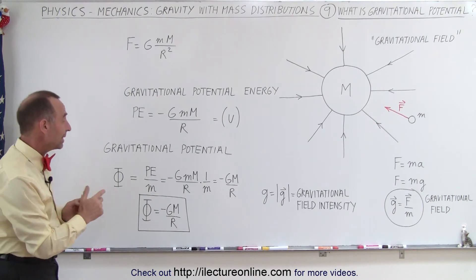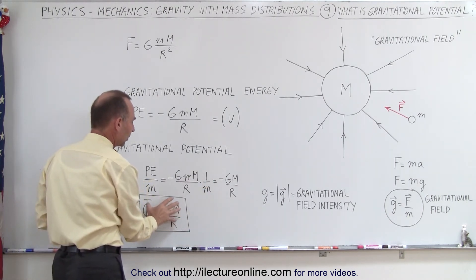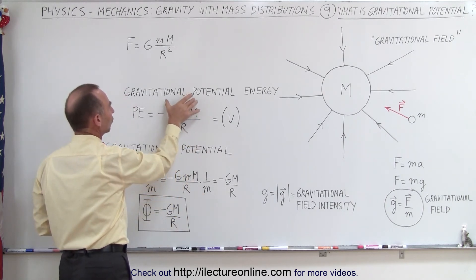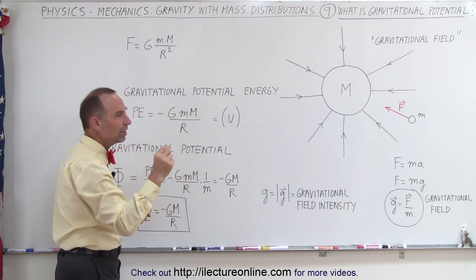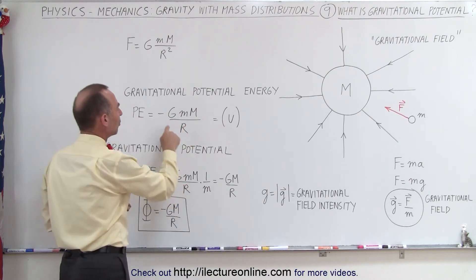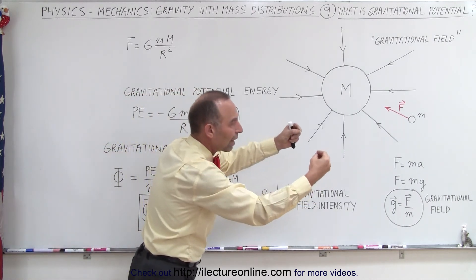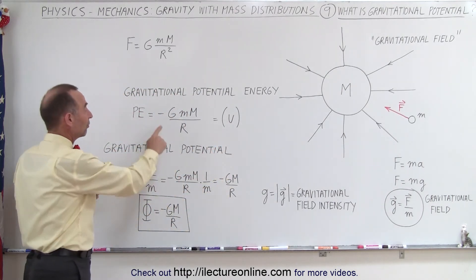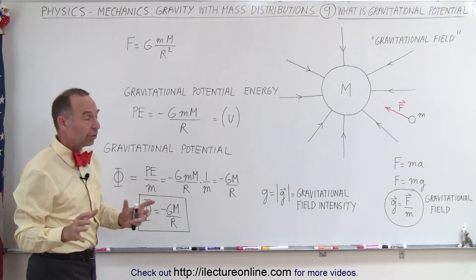If we take the gravitational potential and multiply it by M, we get the gravitational potential energy — the amount of energy it takes to place an object there from infinity. The reason why it's negative is because the force is attractive rather than repulsive. If the force had been repulsive, this would be positive.